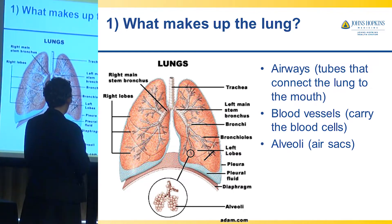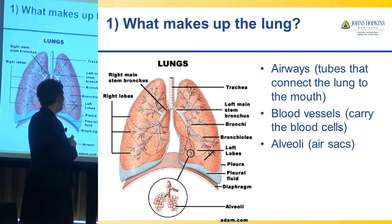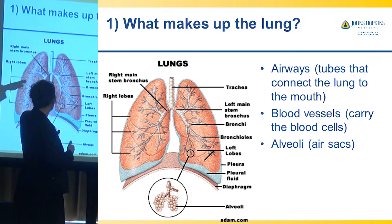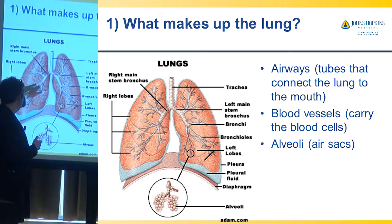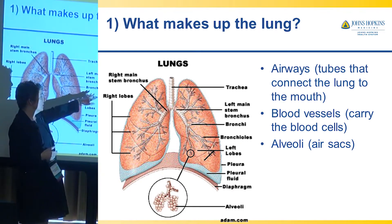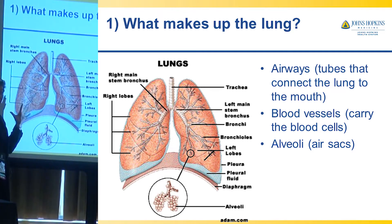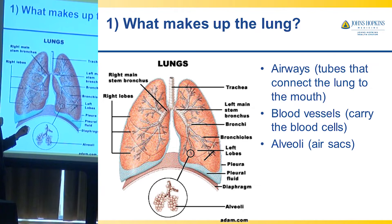The lungs are actually really simple organs — they're really made up of only three components. There are the airways, which are tubes that bring the air from the mouth down into the lung. There are blood vessels, which are very critical because they bring blood into the lungs, and the blood needs to carry oxygen out to the tissues.